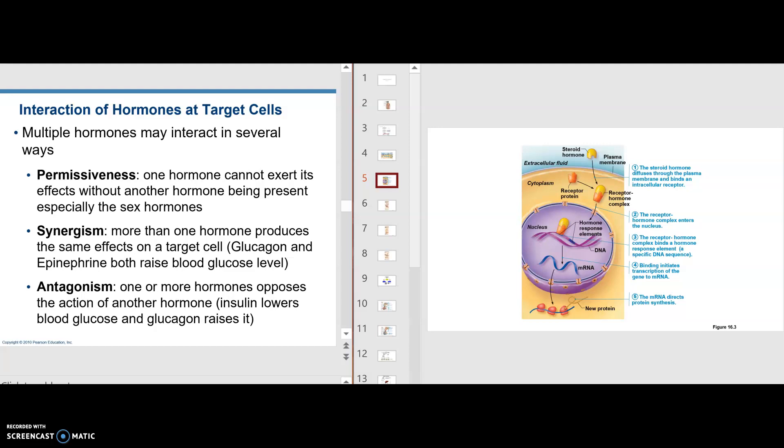One example of two or more hormones is permissiveness. Permissiveness is where one hormone cannot exert its effect without another hormone being present. That's especially with some of the sex hormones, and you'll be talking about that when you study the reproductive system.